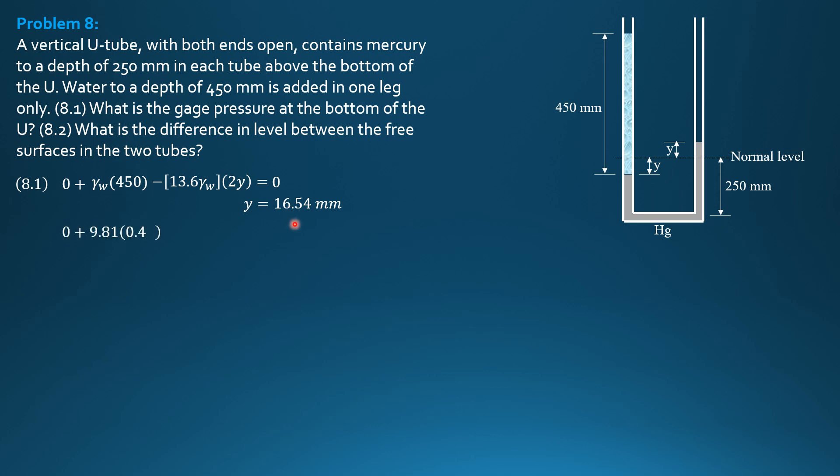so 0, plus 9.81 times 0.45, plus 13.6 times 9.81 times quantity 0.25 minus Y, and Y is 0.01654, equals pressure at the bottom. So pressure at the bottom is 35.56 kilopascals gauge.